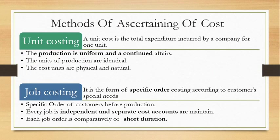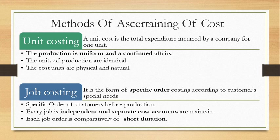The first method is unit costing. Unit costing is an important method, and the third part of cost accounting is fully covered by this. A practical question also comes from this. For example, a mobile manufacturing company has a total cost of 4 lakh for one month.